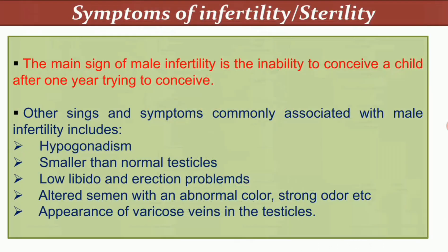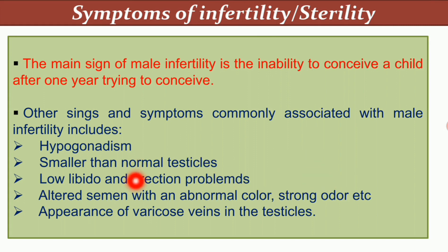Regarding symptoms of male infertility and sterility: the main sign is the inability to conceive a child after one year of trying. Other signs commonly associated with male infertility include hypogonadism, smaller than normal testicles, low libido, erection problems, altered semen with abnormal color or strong odor, and appearance of varicose veins in the testicles.